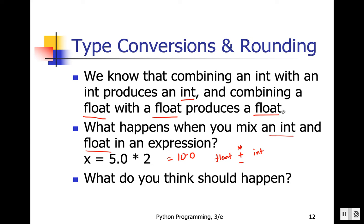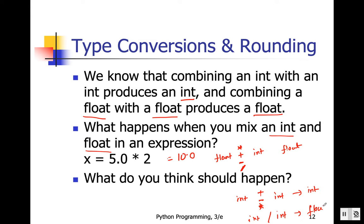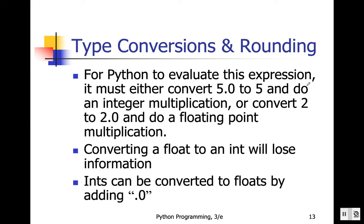Any operation — multiplication, plus, or minus — that involves a float with an int is going to create a float. Integer plus, minus, or multiplication with integer produces an integer, but integer division by integer creates a float. Python evaluates this by converting 5.0 to 5 and doing integer multiplication, or converting 2 to 2.0 and doing floating-point multiplication.